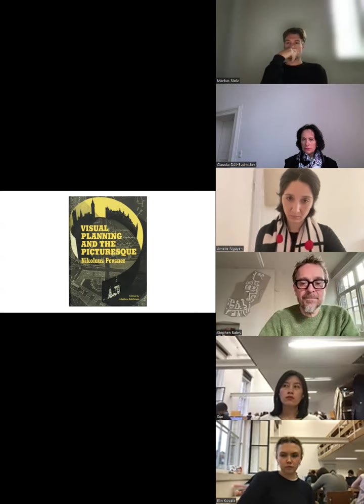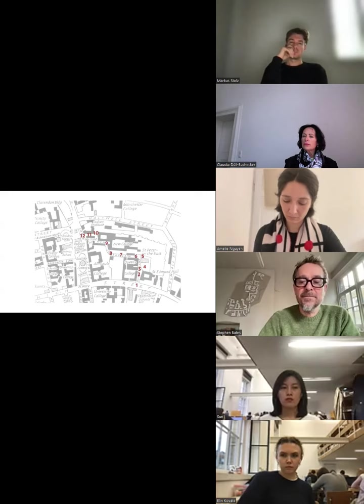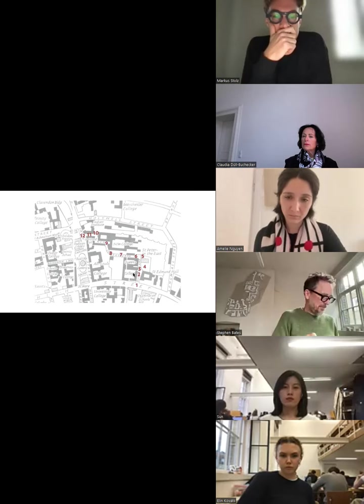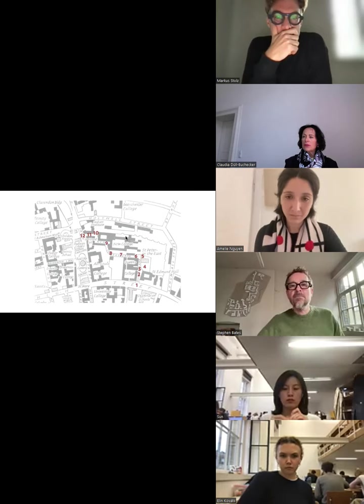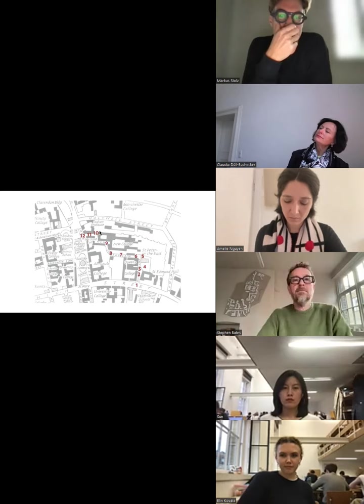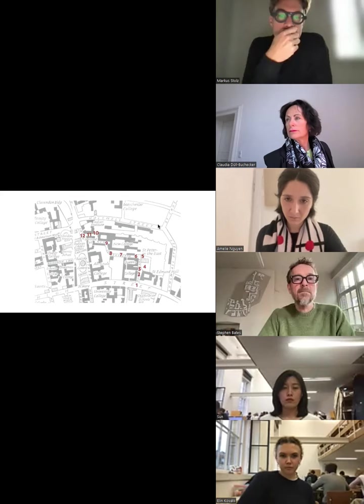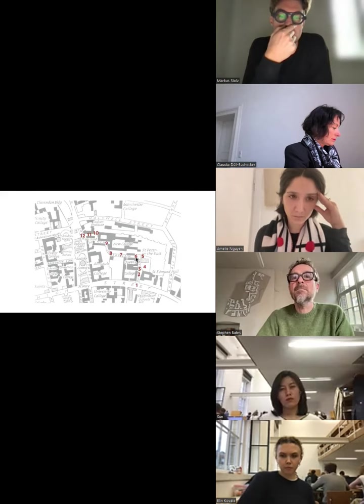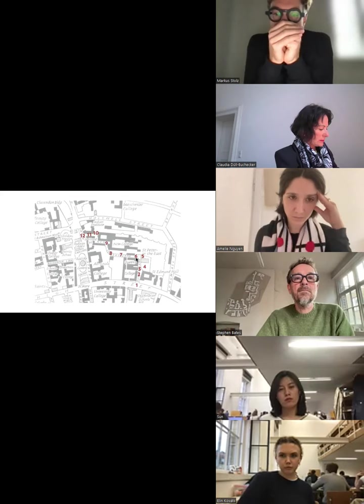He illustrates his argument by walks through Oxford, which he charts. There's New College — you can see the city wall here, Holywell Street — and he does a walk and has a photographer capture all of the views along these twelve points. There's another dozen walks or so, and he uses this to illustrate his argument.